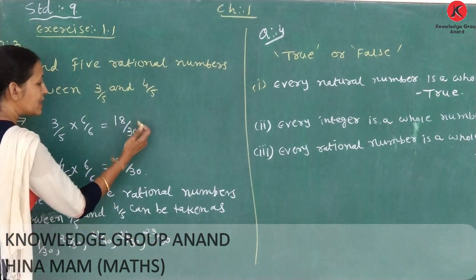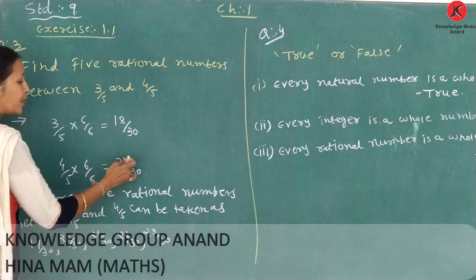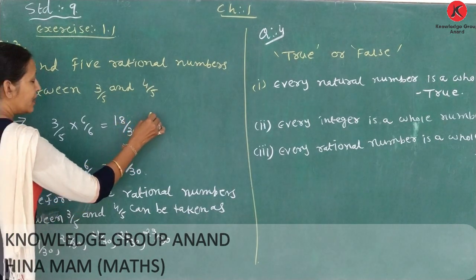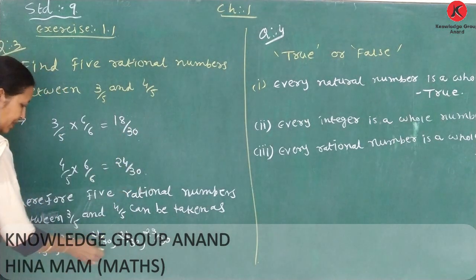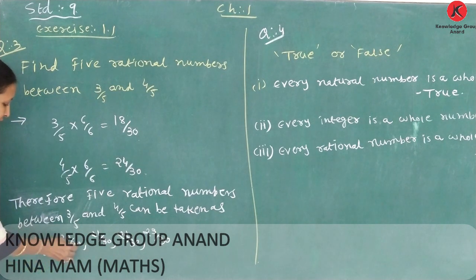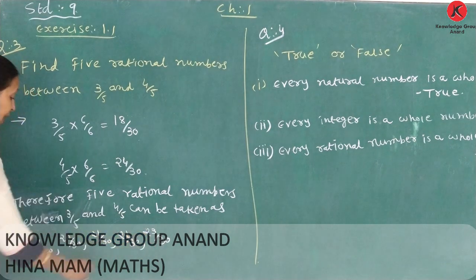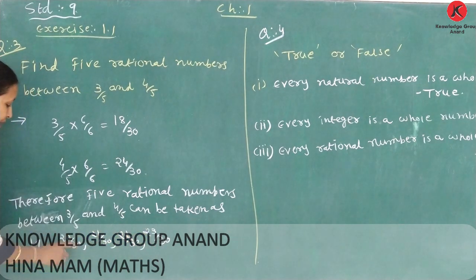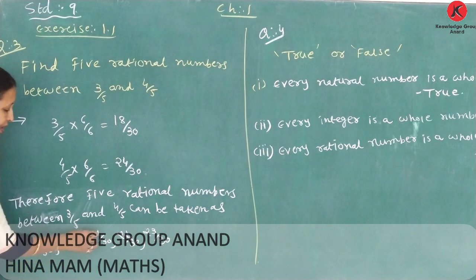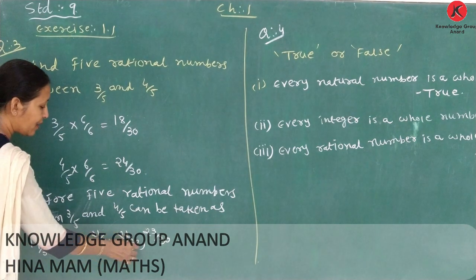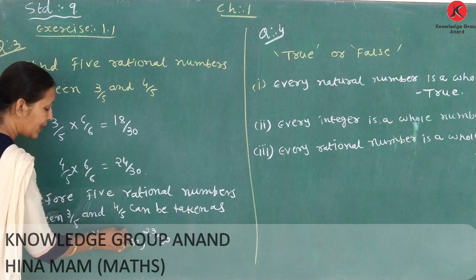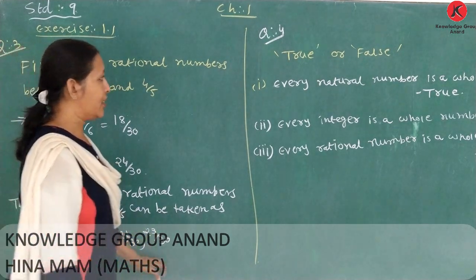We write numbers between 18 and 24, so: 19 by 30, 20 by 30, 21 by 30, 22 by 30, 23 by 30. We can also simplify these: 19 by 30 stays as is, 20 by 30 simplifies to 2 by 3, 21 by 30 simplifies to 7 by 10, and so on.